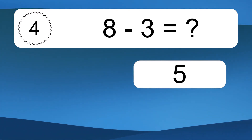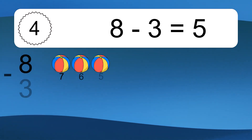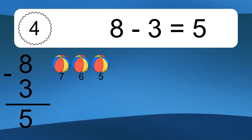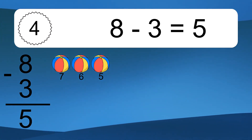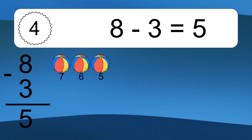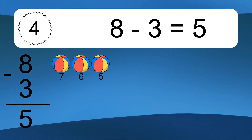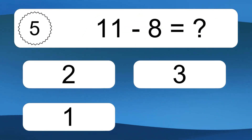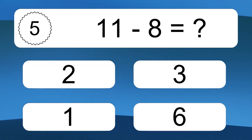Eight minus three equals what? Eight minus three equals five. Let's count it: seven, six, five.